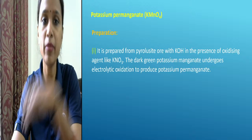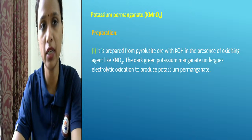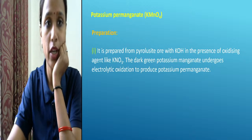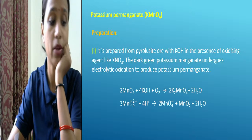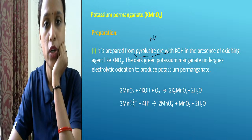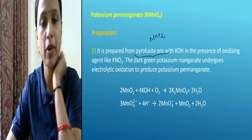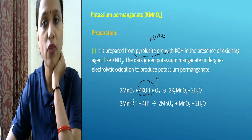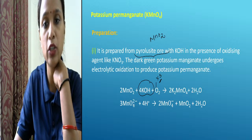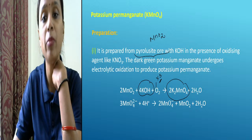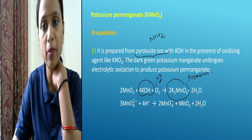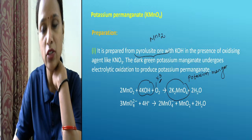Let's start potassium permanganate. We take pyrolusite ore, which is MnO₂. First of all we treat it with alkali and excess of air. After treatment, the pyrolusite ore converts to potassium manganate. So here two things are there: manganate and permanganate.